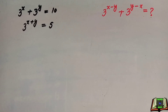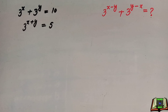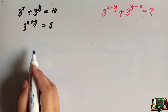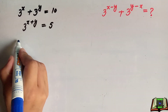Welcome all of you on our channel. Let's see the solution of this tricky yet important question. The question is: 3 to the power x plus 3 to the power y is equal to 10, and 3 to the power x plus y is equal to 5. We have to find 3 to the power x minus y plus 3 to the power y minus x.